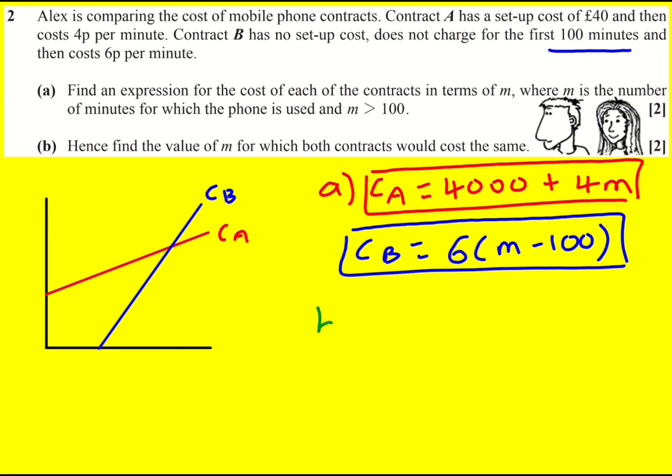Let's keep going then. So for B it says hence find the value of M when they're going to cost the same, that's this point here. So I can just set them equal to one another. 4,000 plus 4M is going to equal 6M minus 600. I've expanded that bracket. Then 4,600 is going to equal 2M. So M is going to be 2,300 minutes.